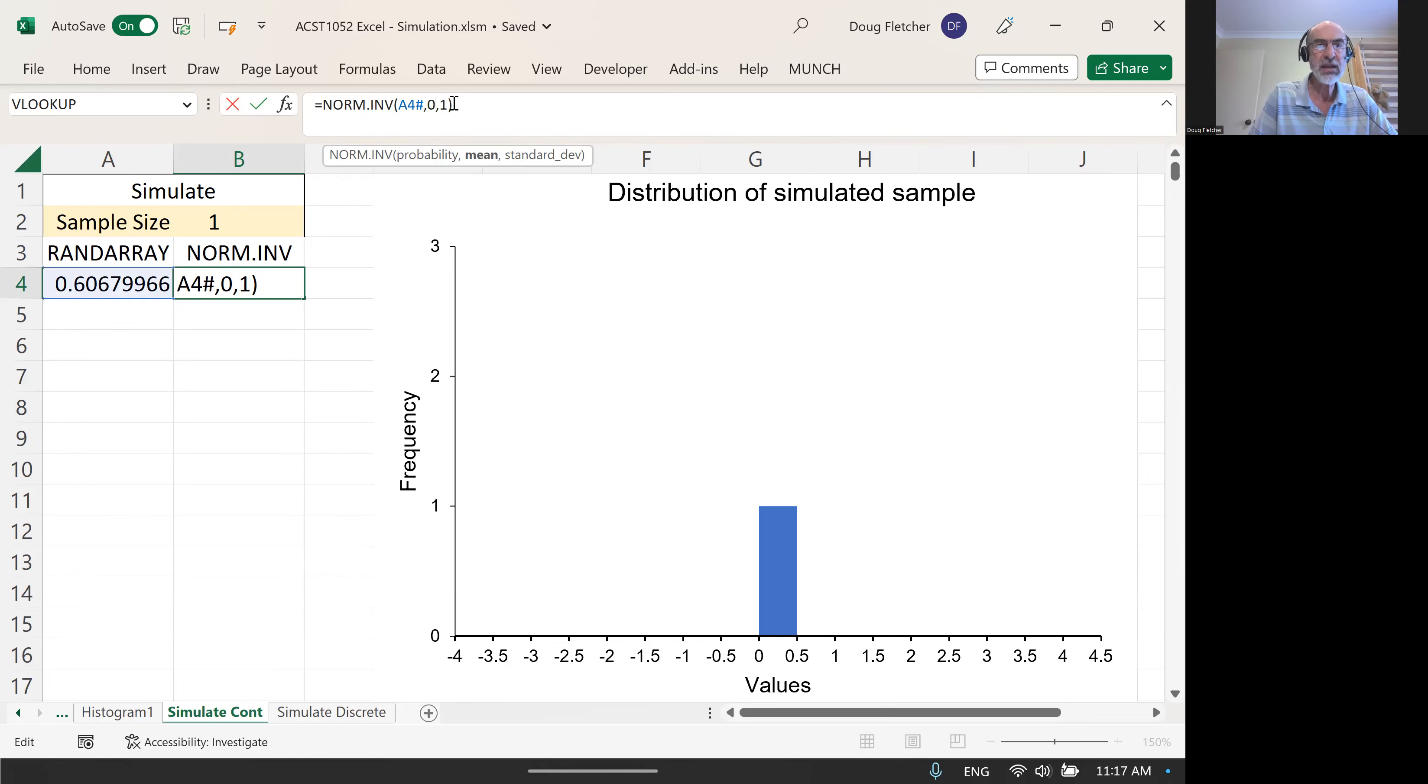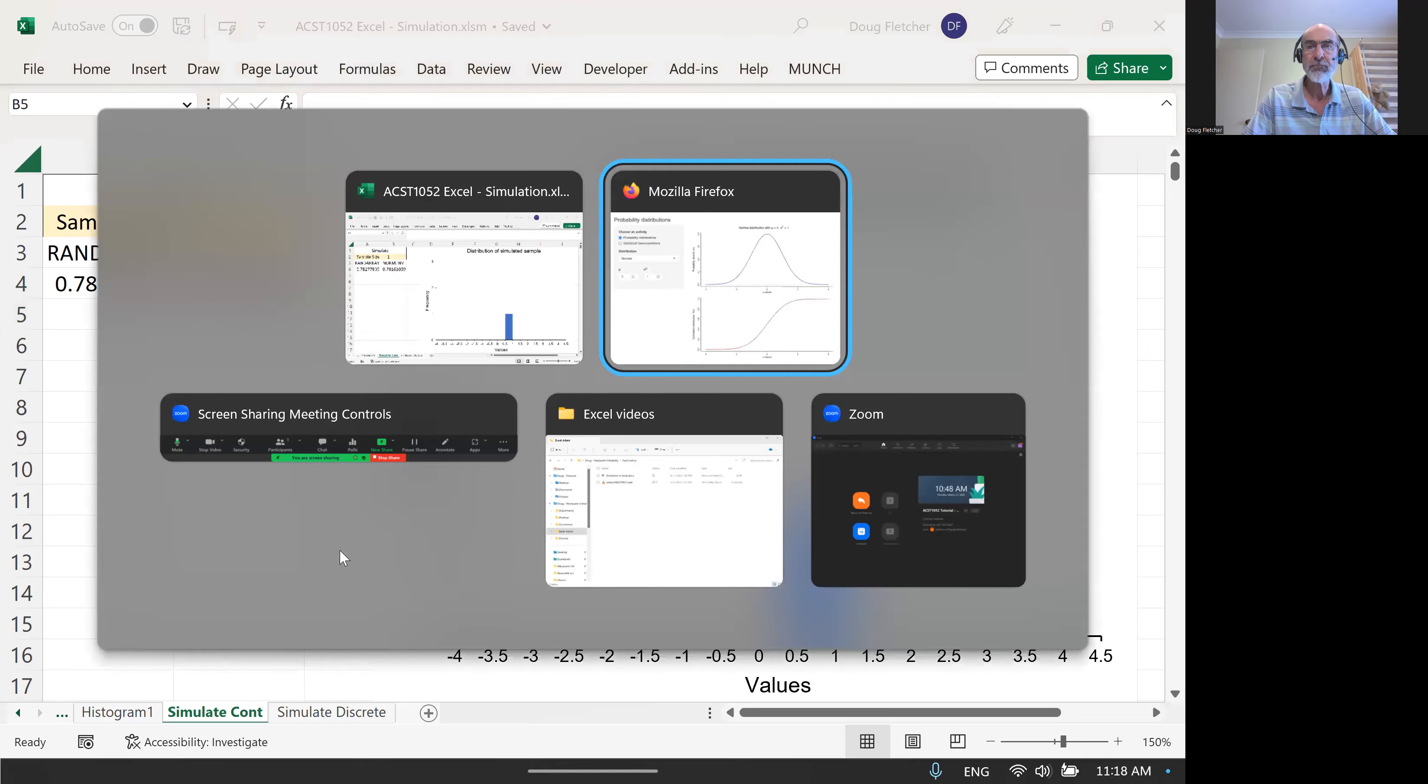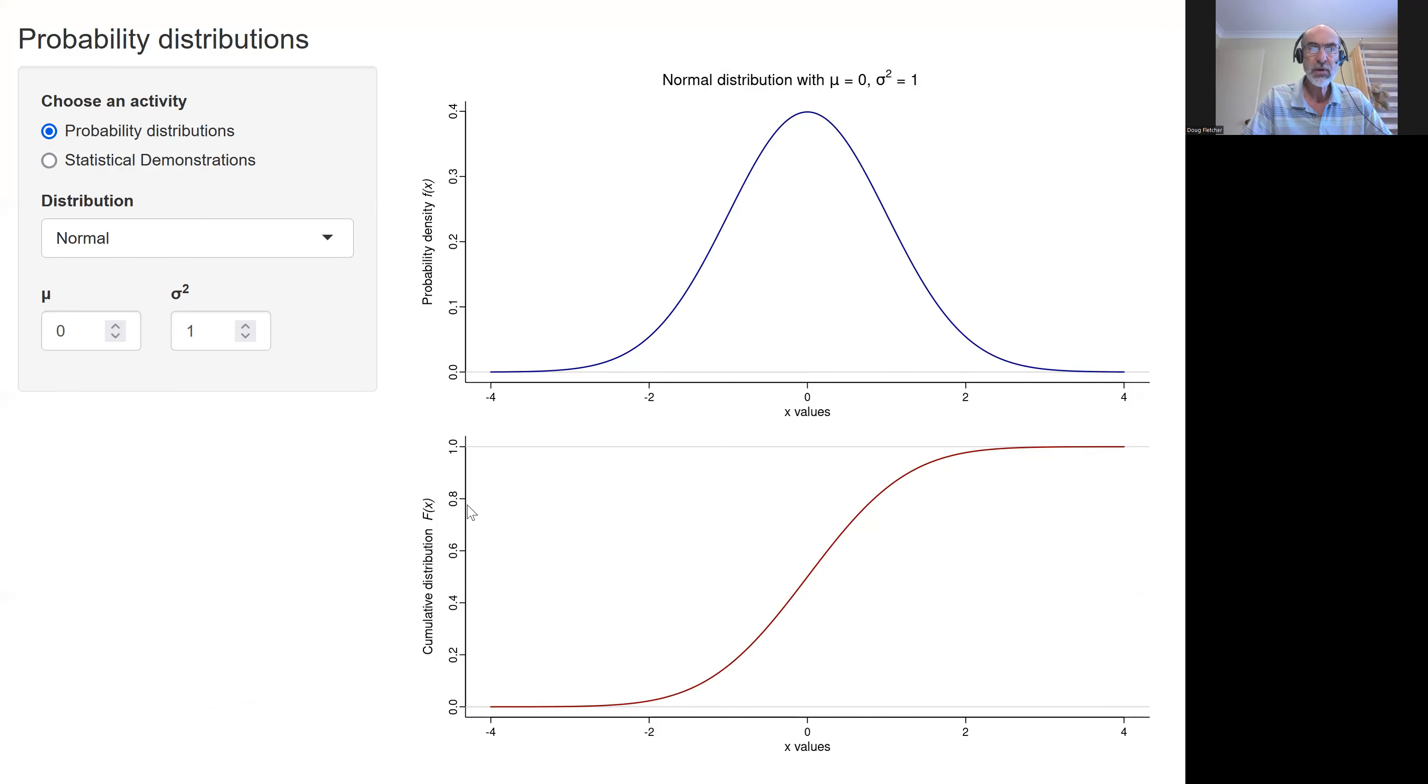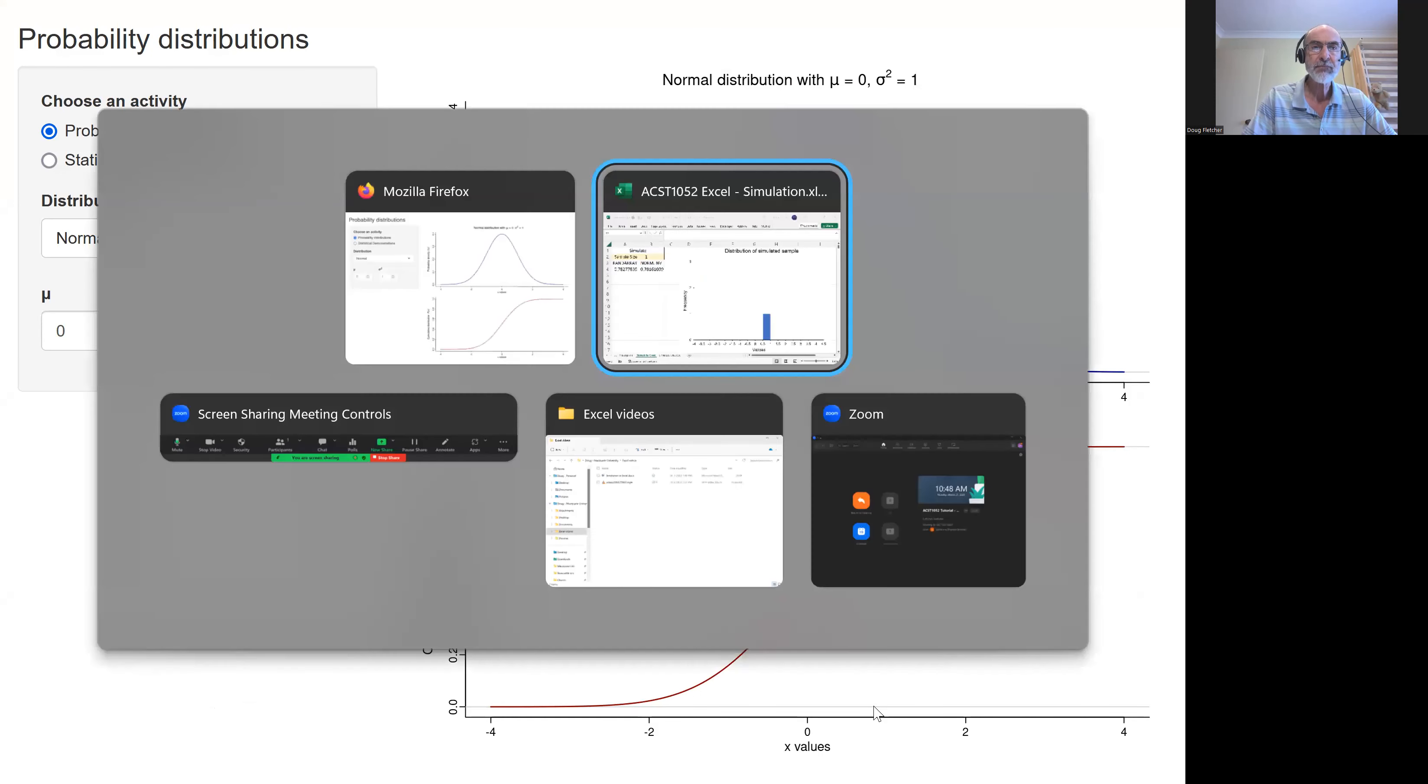As before, the RAND.ARRAY function is volatile, so each time we recalculate this it pops out a different normal value. Just by coincidence, these two values happen to be very similar. We've got a RAND.ARRAY of nearly 0.8 and this gives us a normal variable of around about 0.8. Let's have a look on our cumulative distribution function. If we're around about 0.8 here, a little bit less, we track this across and then we come down onto the x-axis. That's where we end up, around about 0.8.